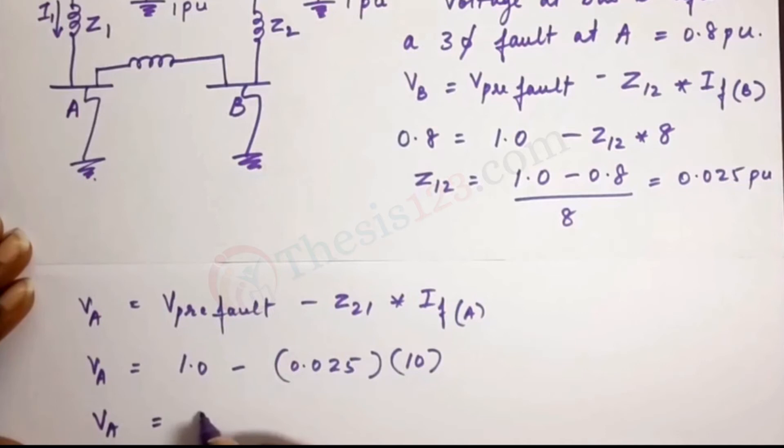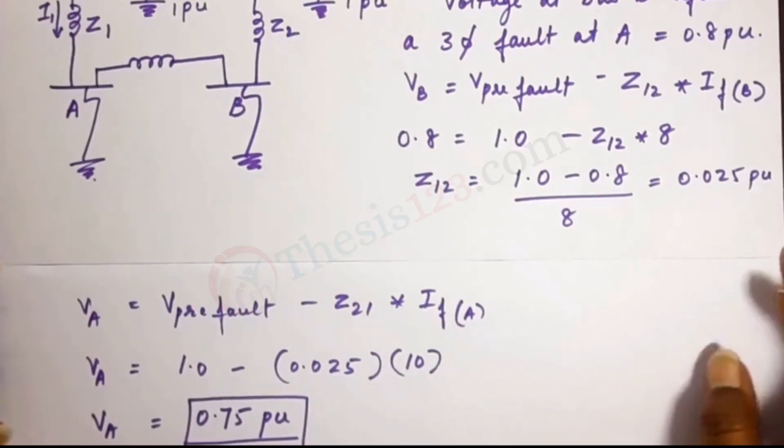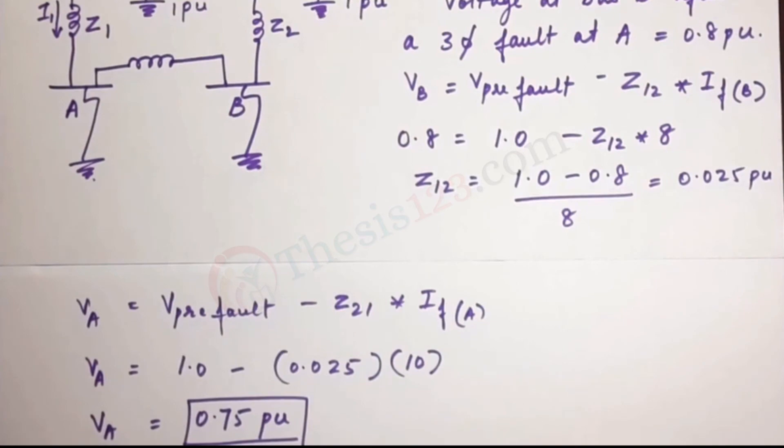So let's solve. We'll get 0.75 PU. So the answer here is 0.75. I hope this is helpful.